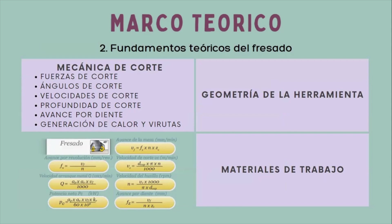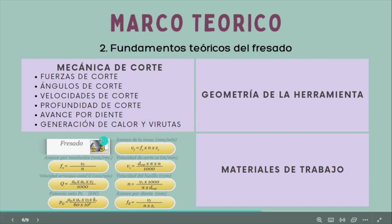La mecánica de corte se centra en los principios fundamentales que regían la interacción entre la herramienta de corte y el material mecanizado. Como son las fuerzas de corte, ángulos de corte, velocidad de corte, profundidad de corte, avance por diente, y generación de calor y rutas.